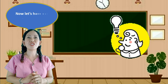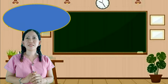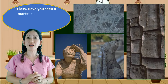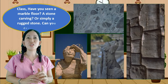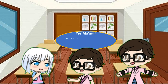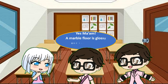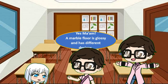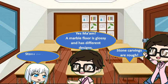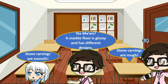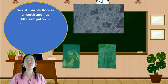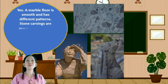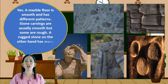Now, let's have a new lesson. Class, have you seen a marble floor, a stone carving, or simply a rugged stone? Can you describe that? A marble floor is glossy and has different designs. Stone carvings can be smooth or rough. A rugged stone has many sharp, rough edges. A marble floor is smooth and has different patterns.